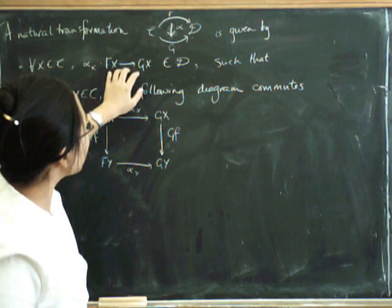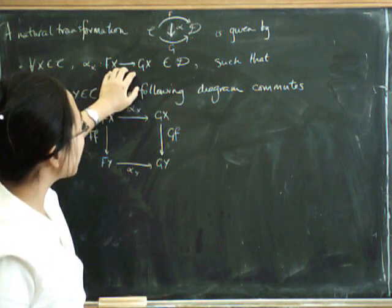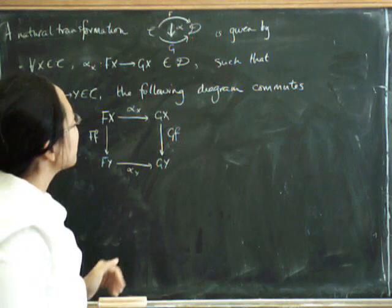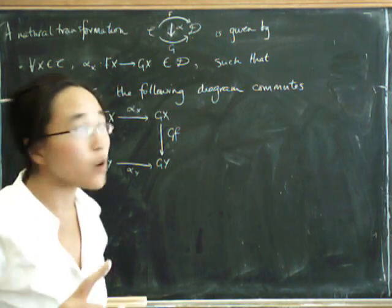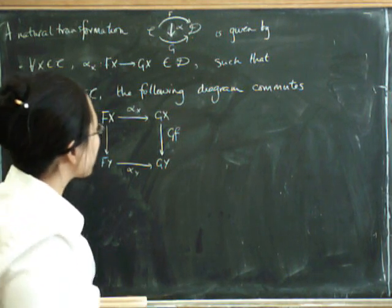So fundamentally, we've got a bunch of morphisms in D going from F of X to G of X. So hopefully, it's now obvious to you how we can compose natural transformations.